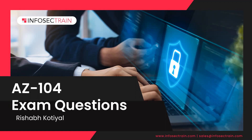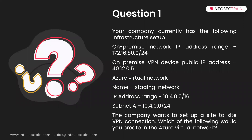Let's start with the very first question. The company currently has the following infrastructure: on-premise network IP address range 172.16.80.0/24, on-premise VPN device public IP address 40.12.0.5. In the Azure Virtual Network, the name of that network is your staging network.